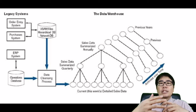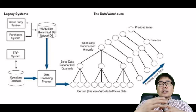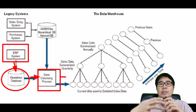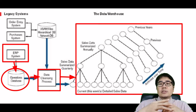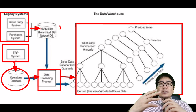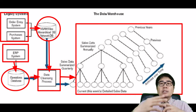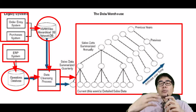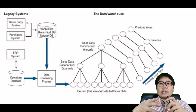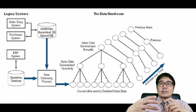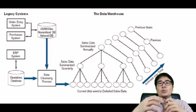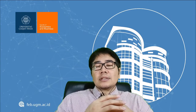In practice, transactional data gathered by the ERP system is first stored in the operational database. It is then cleansed, structured, and standardized before being stored in the data warehousing system. The same applies to data from legacy or functional information systems — it is cleansed and standardized before being stored in the data warehouse, where it can be accessed through the ERP system.